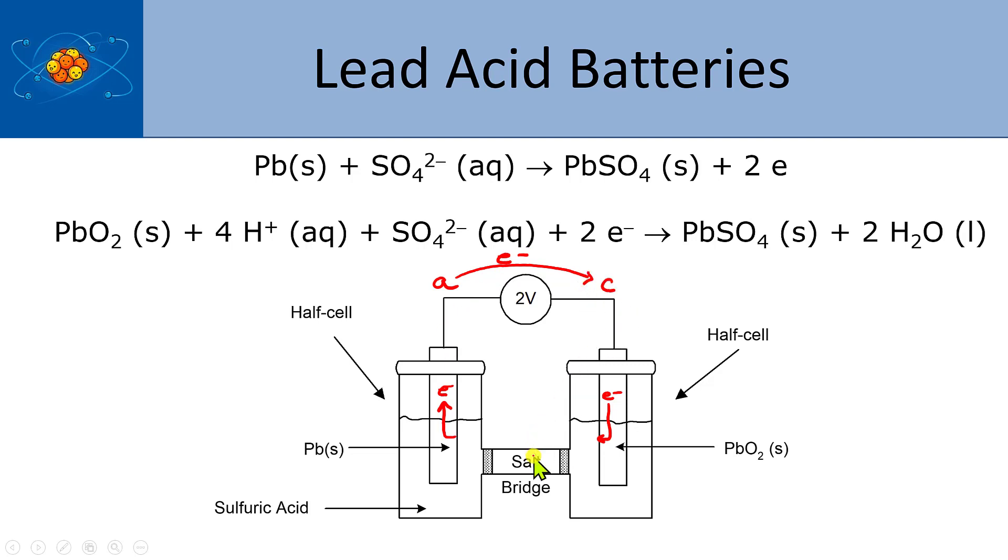In this salt bridge, we can have positive charges moving to the right. So let's say sodium nitrate was my electrolyte in my salt bridge. Then sodium ions could move to the right. That's one way to compensate for the buildup of negative charge over here. But the other way is that I could have nitrate ions moving to the left. So there's actually a couple of ways these ions operate to compensate for charge that's flowing through this electrochemical cell.